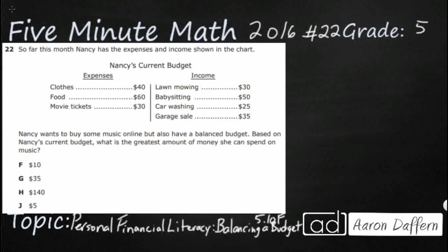So, Nancy has expenses and income shown in this chart. We've got them right here — expenses and income. Expenses is money that's being sent out; this is money you are spending. Income is money that you are bringing in. An easy way to remember that is 'in' for income.